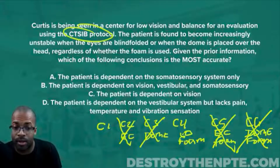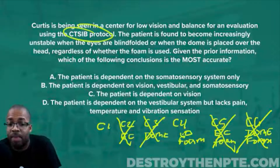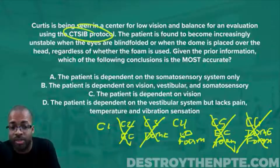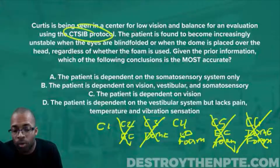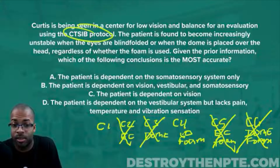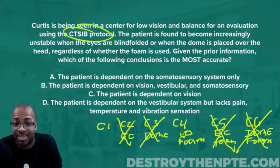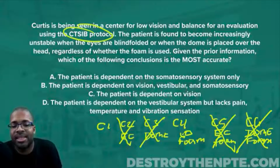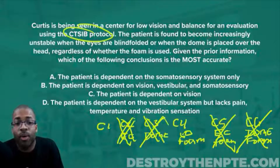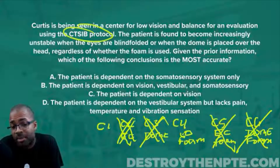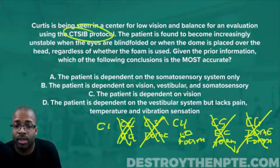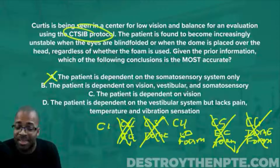Now let's evaluate the answer choices. Answer A says the patient is dependent on the somatosensory system only. In conditions C2 and C3, the patient is on level ground — that's where we're really testing the somatosensory system. But the patient still falls on C2 and C3, so we know the somatosensory system is a problem. We can eliminate A — the person is not dependent on it.